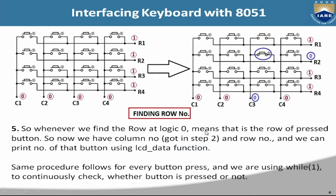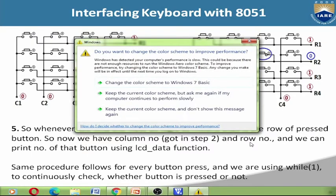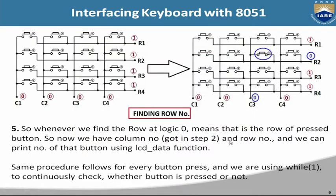Step 5: Whenever we find a row at logic 0, that is the row of the pressed button. Now we have both the column number and row number, and we can print the number of that button using the lcd_data function. The same procedure follows for every button press, and we use a while loop to continuously check whether a button is pressed or not.